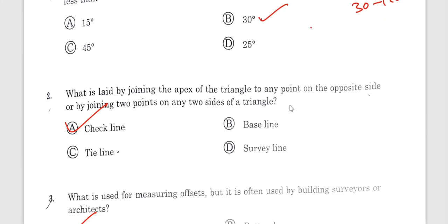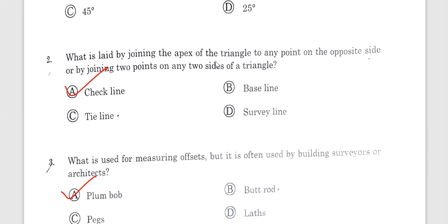Coming to question number 2. What is laid by joining the apex of the triangle to any point on the opposite side or by joining two points on any two sides of a triangle? The answer is check line. So check line is basically used for the second purpose. If you have to correct it, you will have to properly survey accuracy. Check line is used for the second purpose by joining the apex of the triangle to any point on the opposite side.